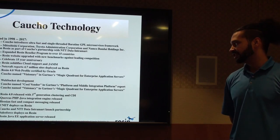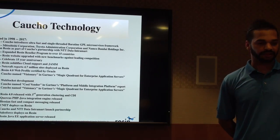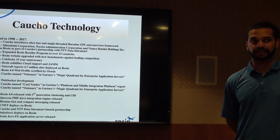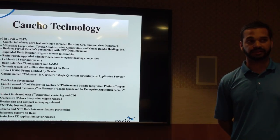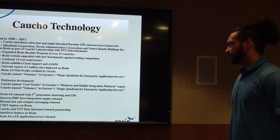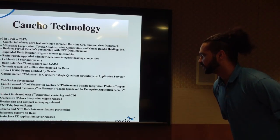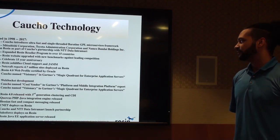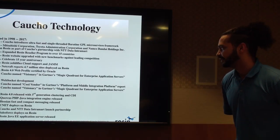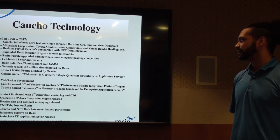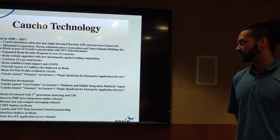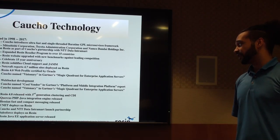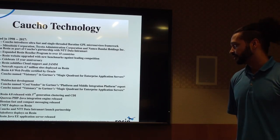Quarkus is our PHP-to-Java integration — it converts and compiles PHP code into Java to run on the server. Moving forward, we released Resin 4.0 in 2008. In 2012, we got a report from Netcraft that we had almost five million sites deployed on Resin.